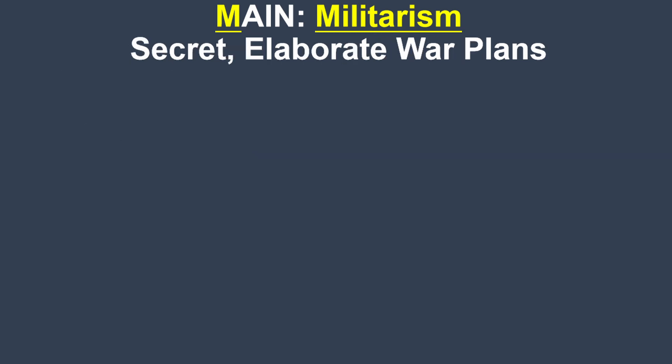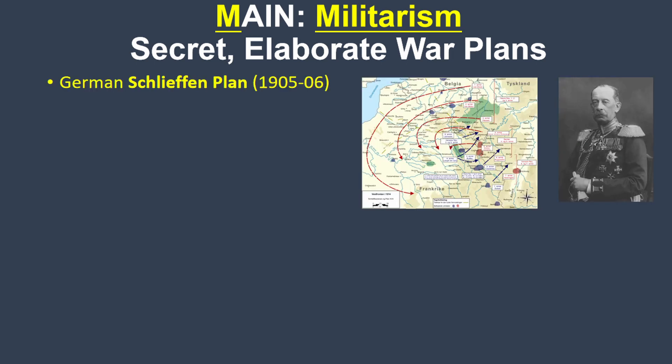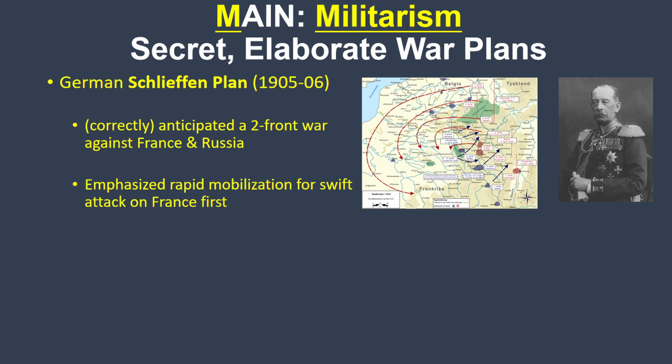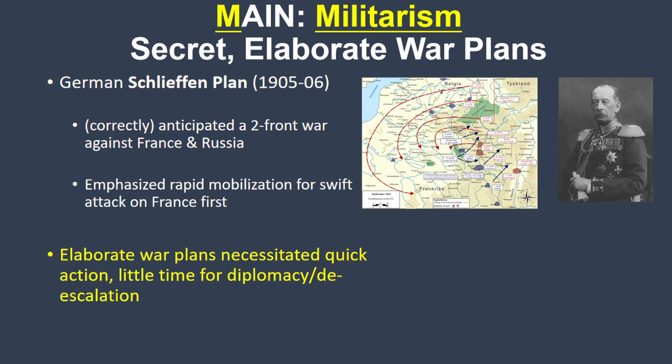In addition to building up their militaries, the European powers were also secretly developing elaborate war plans for how to use them. Most famous was the German Schlieffen Plan, which anticipated a war on two fronts with both France and Russia and required a rapid mobilization to attack France first. Since these plans required quick action to go according to schedule, it left little to no time for diplomatic attempts to prevent conflict. Intensified nationalism, increased armaments, and war plans all incentivized aggression.